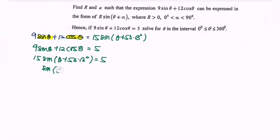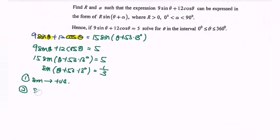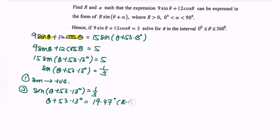So sin(θ + 53.13°) = 1/3, after simplifying 5/15. Since sin is positive, we are in the first and second quadrants. Step 2 is to find the basic angle: sin(θ + 53.13°) = 1/3, giving a basic angle of 19.47°.